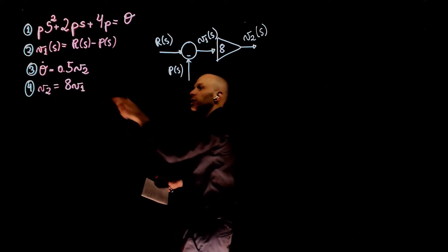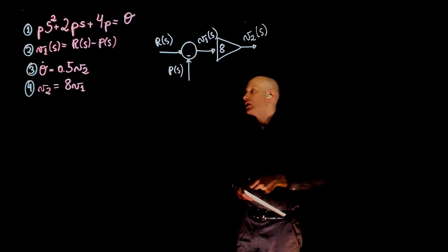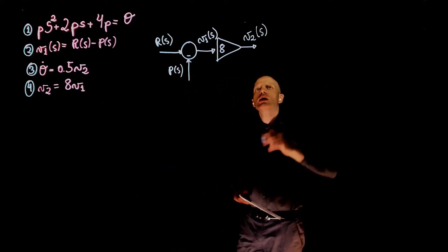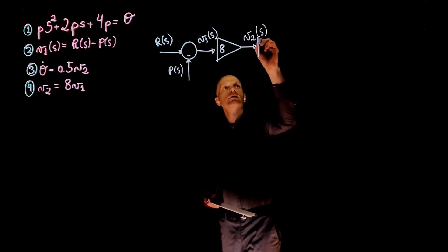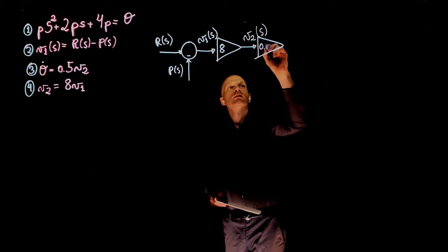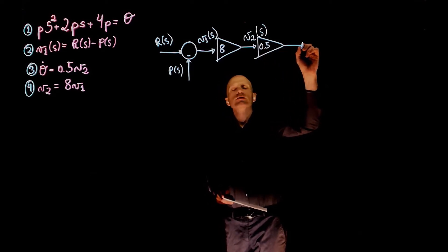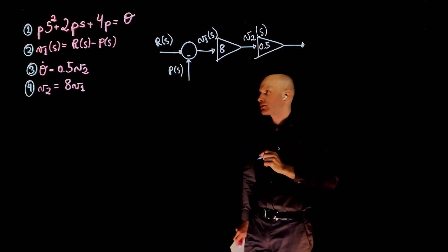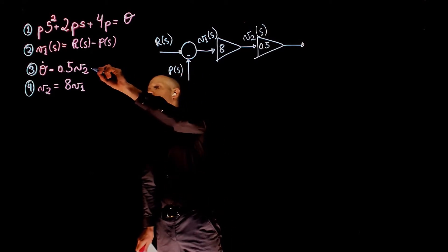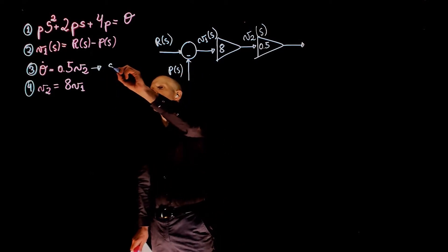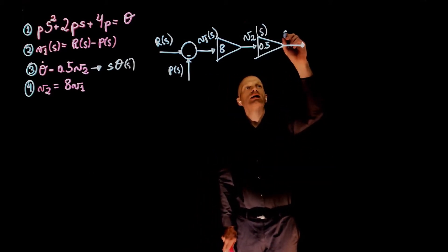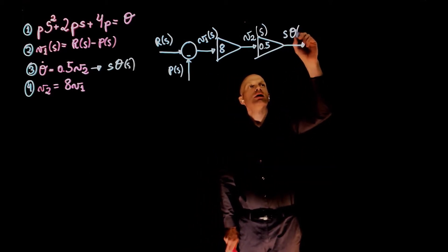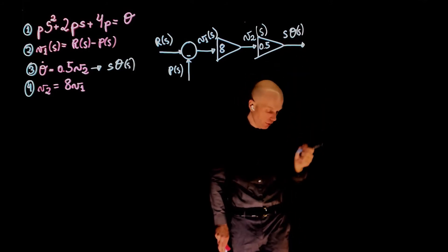If you now multiply v2 by 0.5, the output of this is theta dot. Theta dot in the frequency domain is s theta of s. So the output here is s times theta of s, or the derivative of theta.